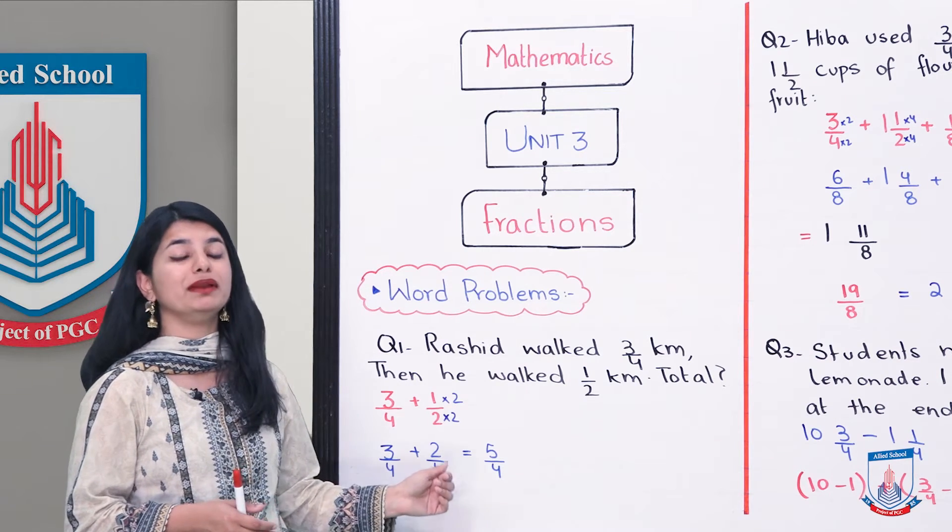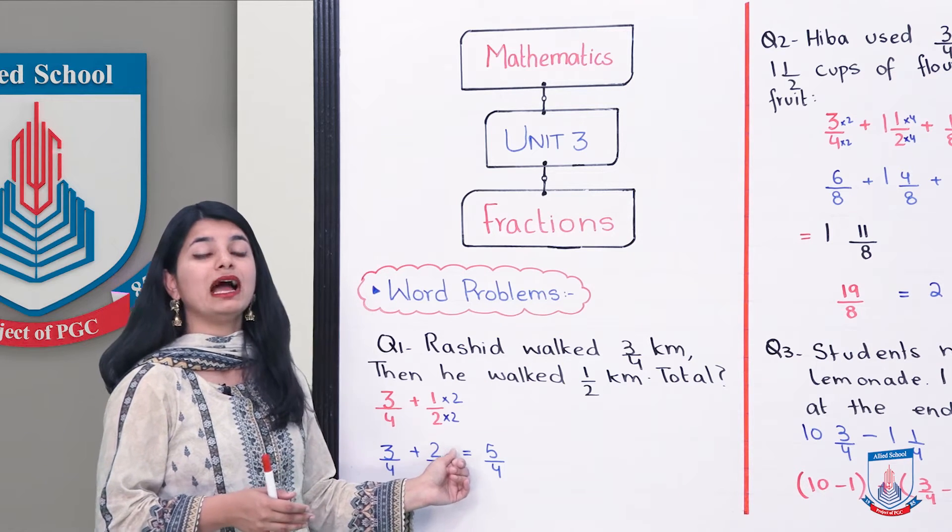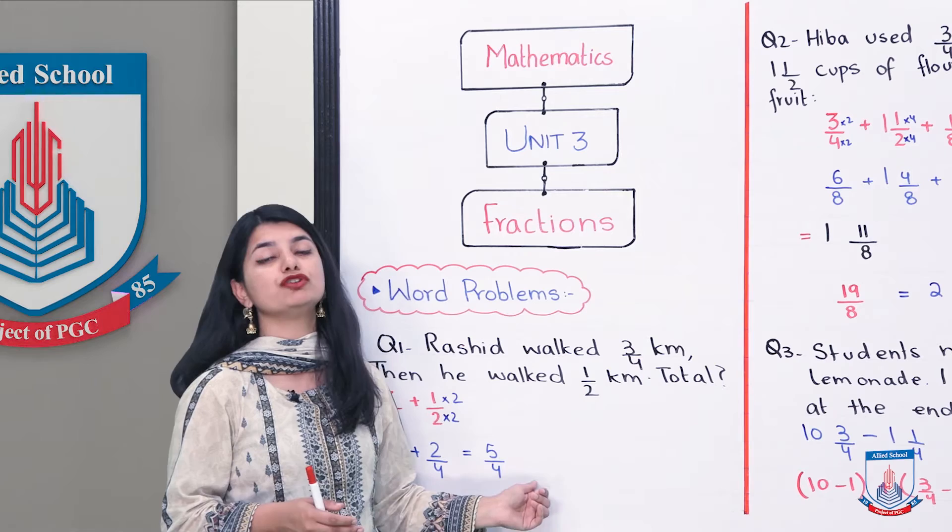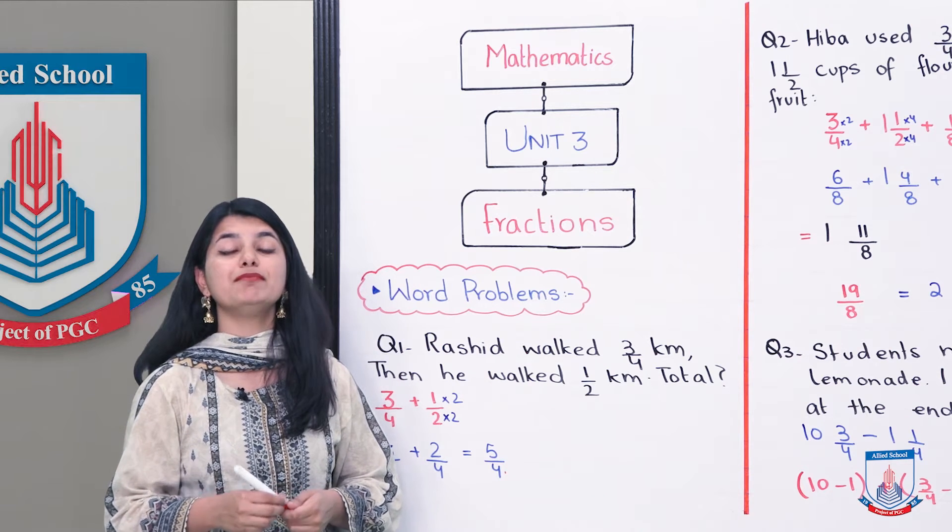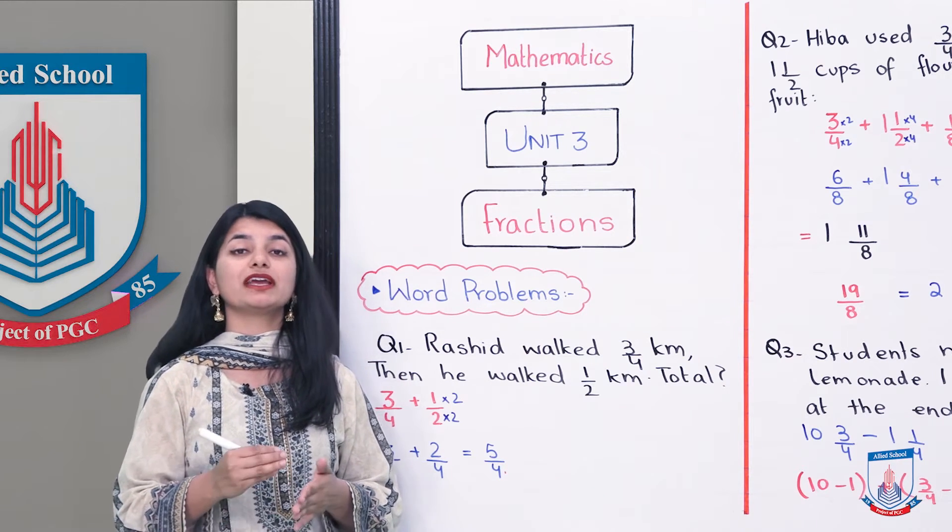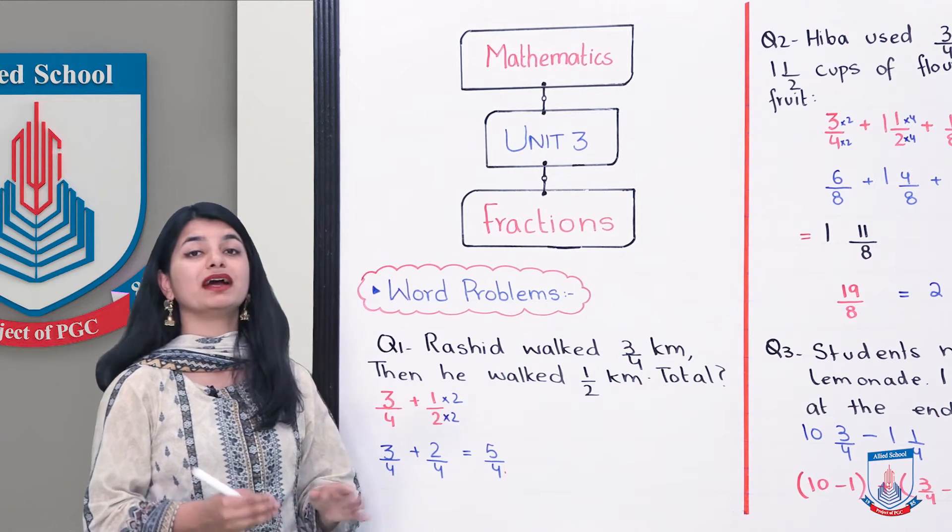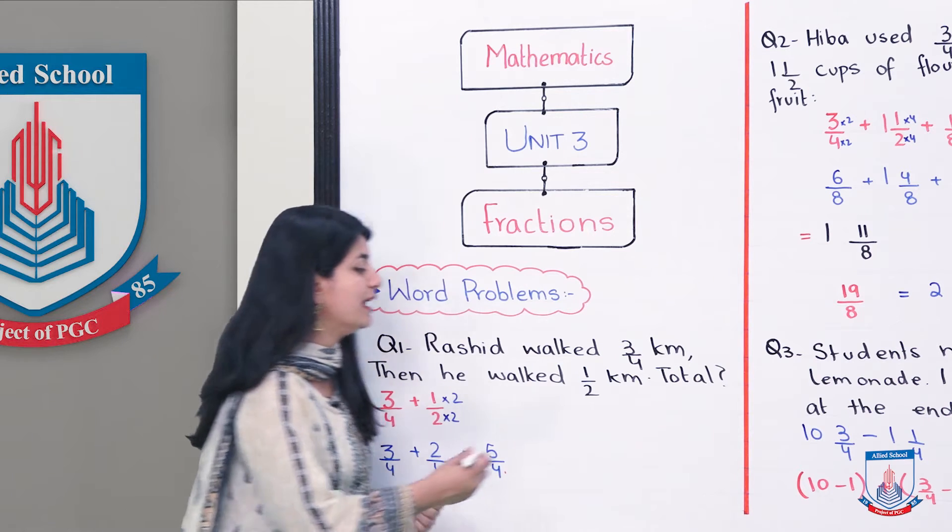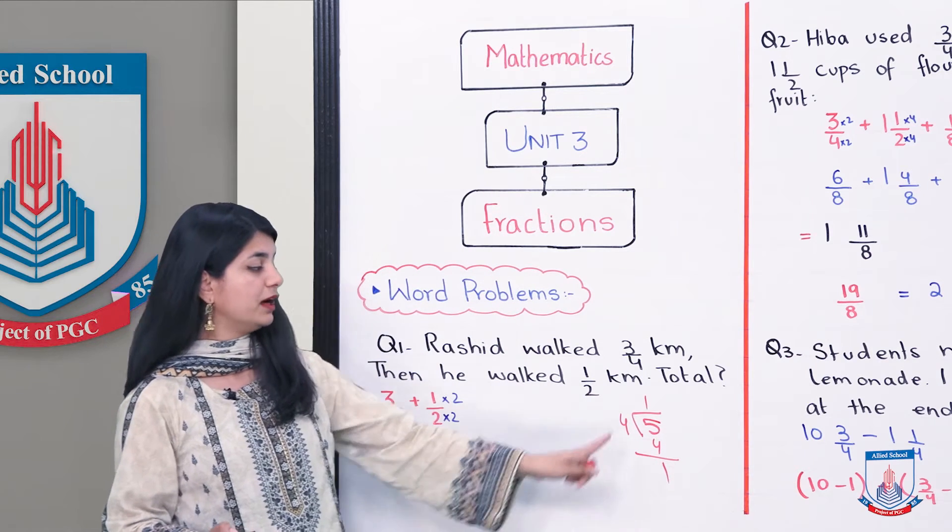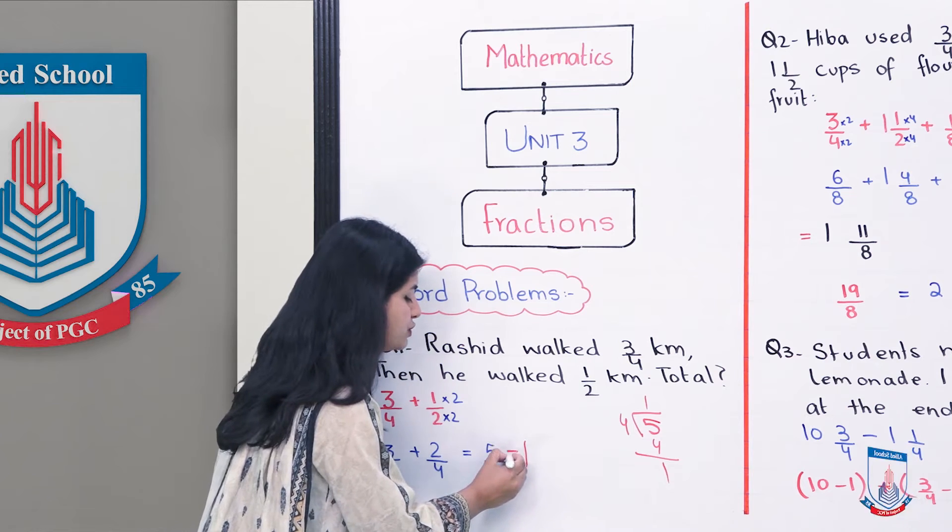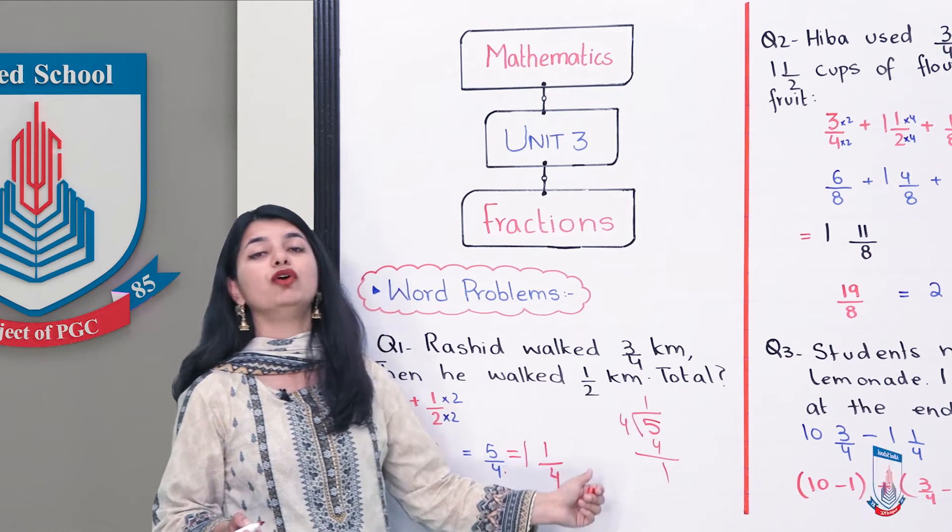So, you will add these. If we convert it to proper or mixed fraction, we will divide it by 4, 4 ones are 4 and a remainder of 1. So, your answer is quotient 1, your whole number is equal to 1, then your remainder is numerator and denominator is 4 as it is. So, your answer is 1 whole 1 by 4.